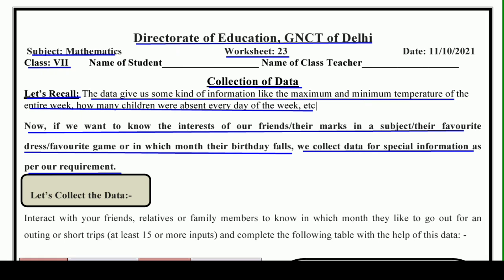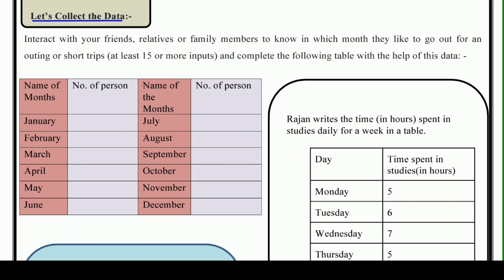That purpose decides how we collect data. For example, if we want to know in which months our friends' birthdays fall, we will go and ask all 15 or 20 friends separately — this is what we call collection of data. So now let's collect the data — let's try to collect data.